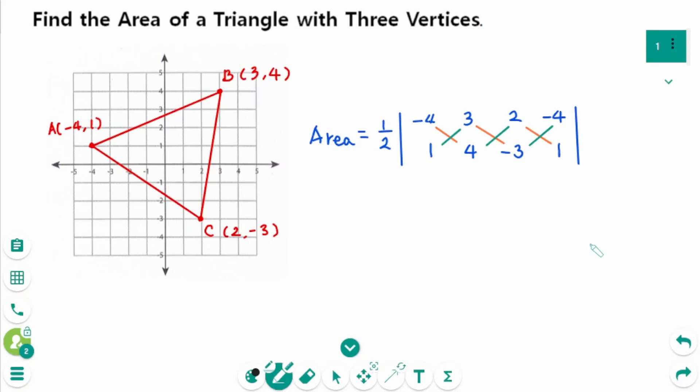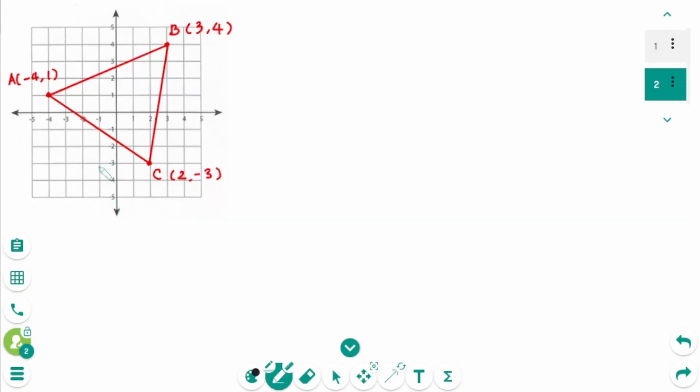This video will cover how to find the area of a triangle with three vertices. There are three vertices: A, B, and C.